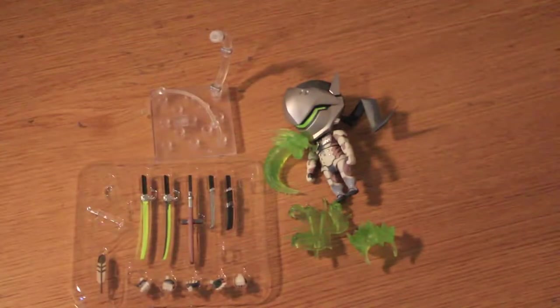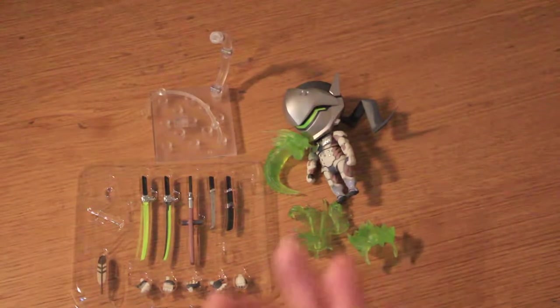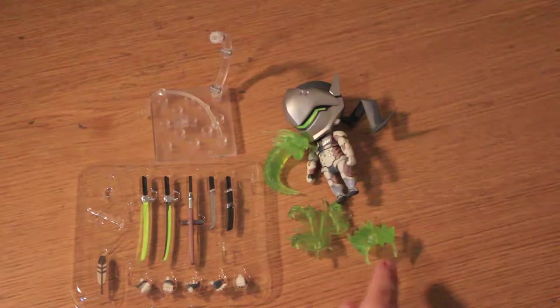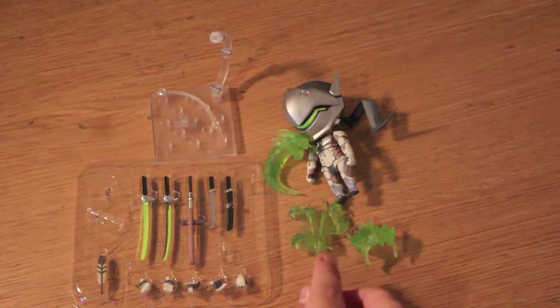It also includes 7 hands, 6 pairs of open, closed and gripping hands and a shuriken holding hand. A fun nod to the animated short comes in the form of a hawk feather.